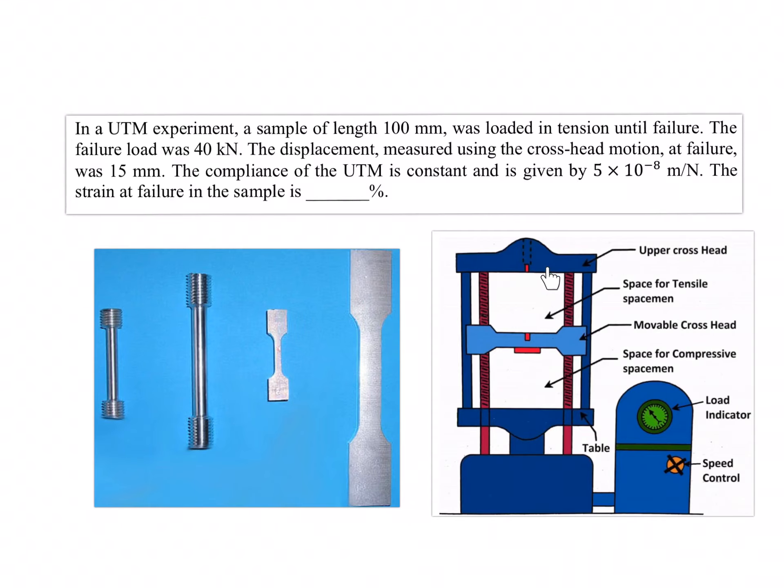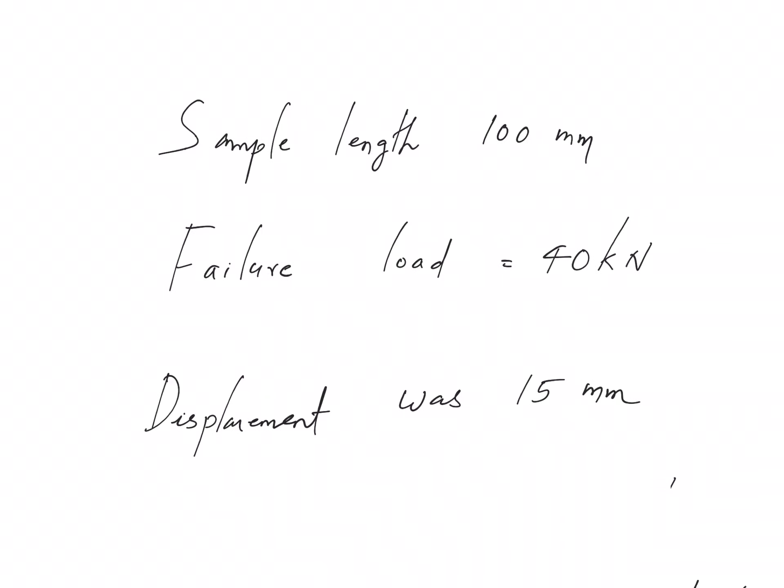So when you use your cross head motion as a measurement of displacement, you measure both displacements - you measure the displacement that comes out of the specimen as well as the displacement that is caused by the deformation of the UTM itself. Makes sense? So the measurement of 15 mm is not from the specimen alone. There could be a contribution from the deformation of the UTM also.